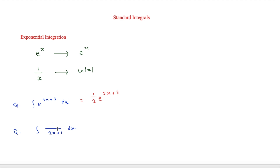The next question involves a ln result. Because we have 2x in the expression, it's going to give half ln modulus 2x plus 1. For example, if we had 3x instead, we would get one third ln modulus 2x plus 1.